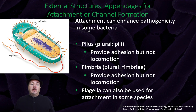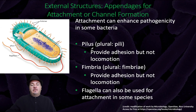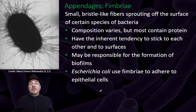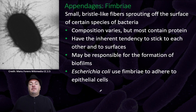In addition to external structures for motion, we can also have external appendages used for attachment or channel formation. Attachment can often cause bacteria to be more pathogenic. Ways that attachment occurs include through pili, fimbriae, or sometimes flagella in some species. Fimbriae are small bristle-like fibers sprouting off the surface of certain bacteria. Their composition varies but most contain protein, they have a tendency to stick to each other and to surfaces, and they may be responsible for the formation of biofilms. For example, E. coli uses fimbriae to adhere to epithelial cells.